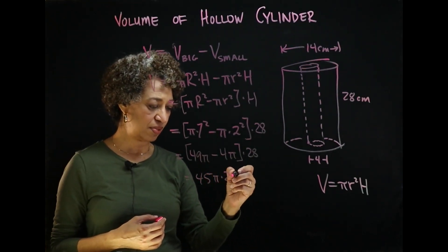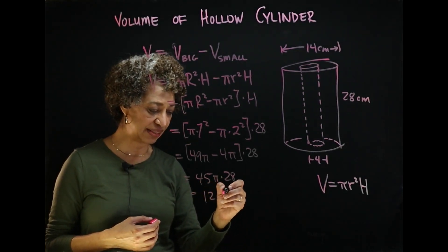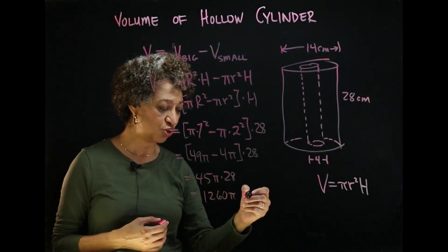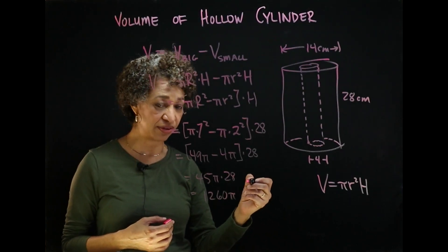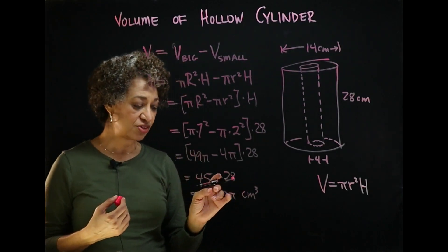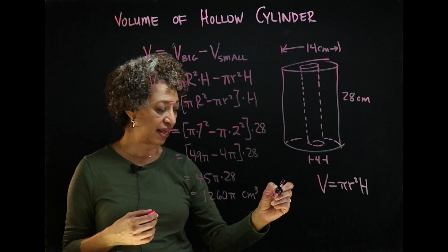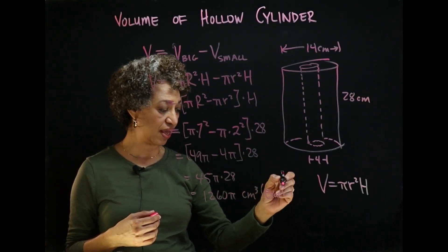And we multiply that times 28 and we get 1260 pi cubic centimeters. Volume is in cubic units because it involves three dimensions. So 1260 pi cubic centimeters. That is an exact answer. Okay?